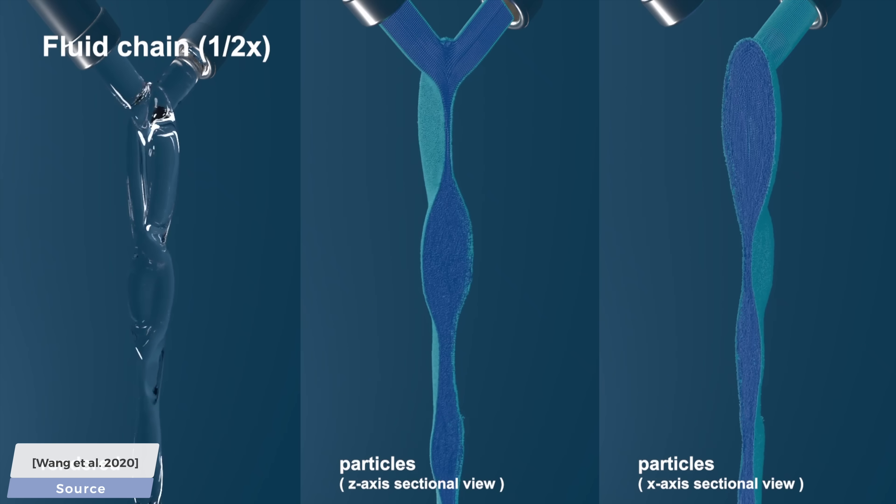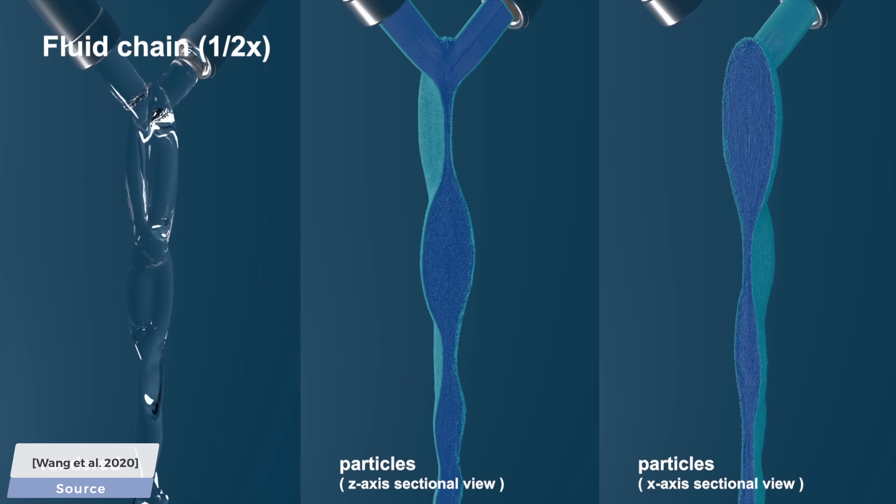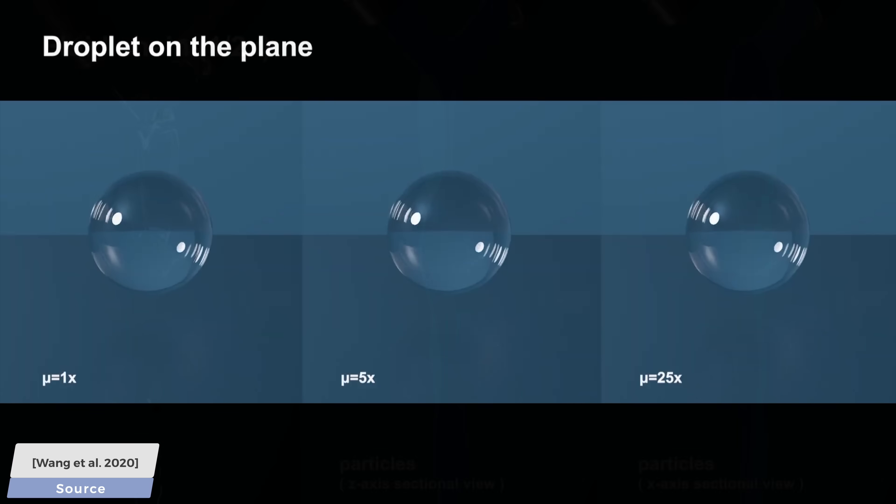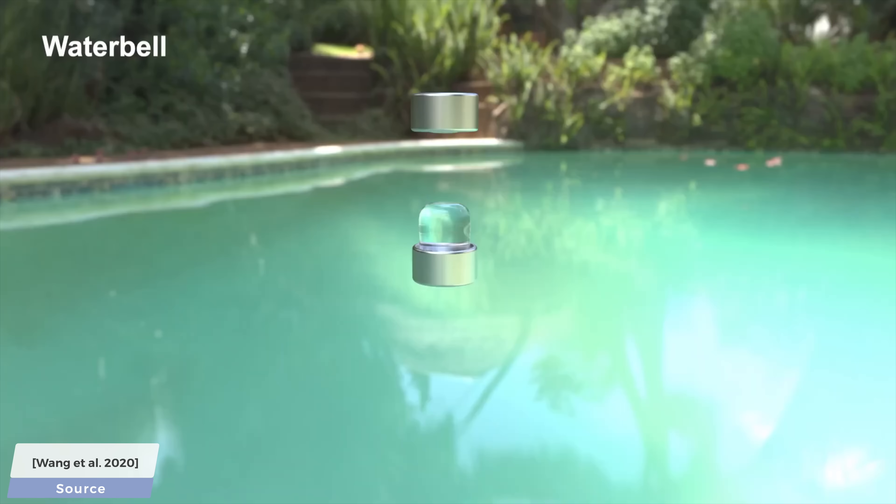So, how much do we have to wait to get these results? A bit. Simulating this fluid chain example took roughly 60 seconds per frame. This droplet on a plane example runs approximately 10 times faster than that, it only needs 6 and a half seconds for each frame. This was one of the cheaper scenes in the paper, and you may be wondering, which one was the most expensive.